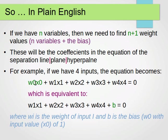So B is the same as W0X0 because, again, X0 is 1. So WI is the weight of input I and B is the bias, W0 with input value X0 of 1.